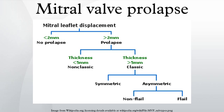Prognosis: Generally, MVP is benign. However, MVP patients with a murmur — not just an isolated click — have an increased mortality rate of 15 to 20%. The major predictors of mortality are the severity of mitral regurgitation and the ejection fraction.